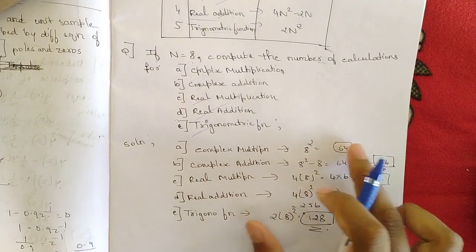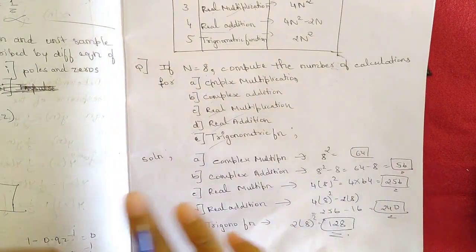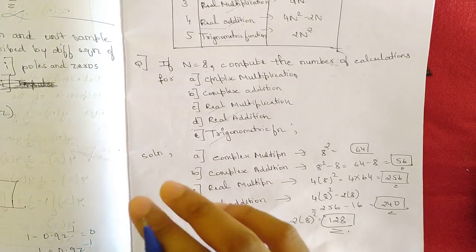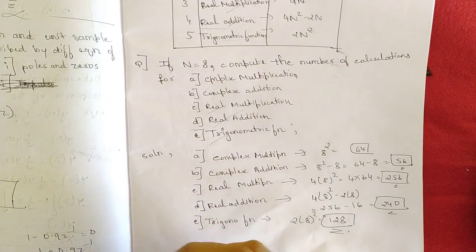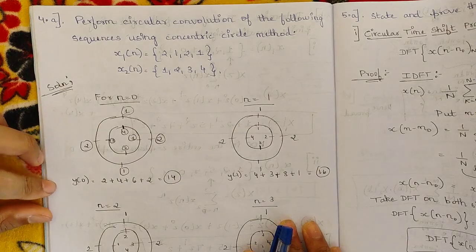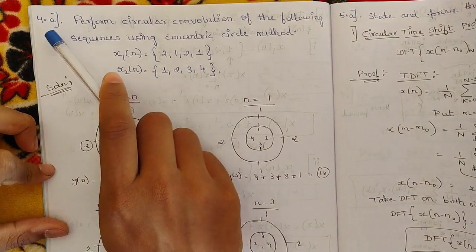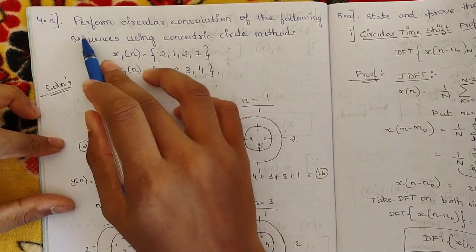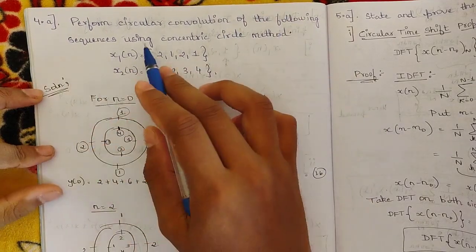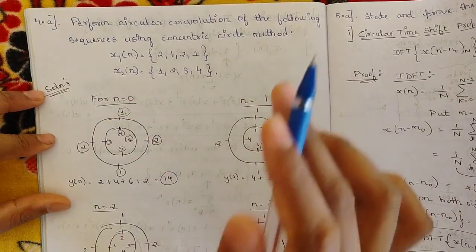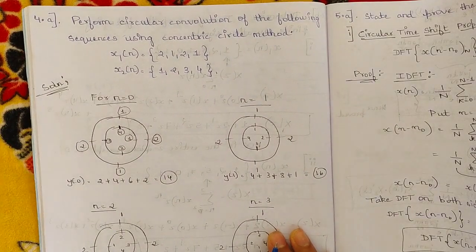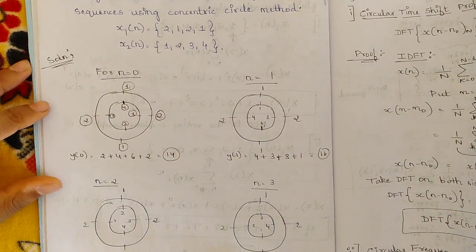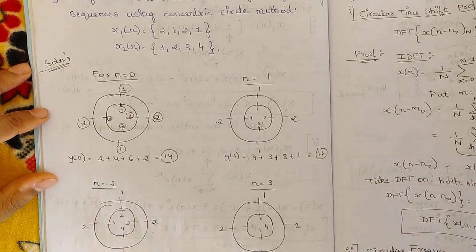This type of question won't usually be asked, but since it is part of the syllabus I've included it. The next question is 4a from the model paper: perform circular convolution of the following sequences using the concentric circle method. This is one important method I haven't mentioned in my conceptual videos. It's a very easy method — nothing much to do.